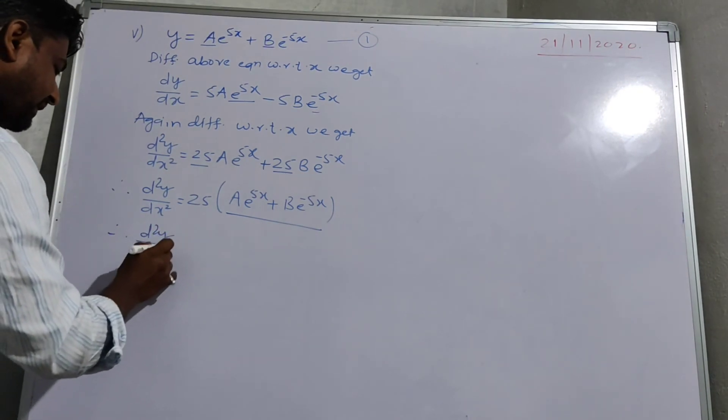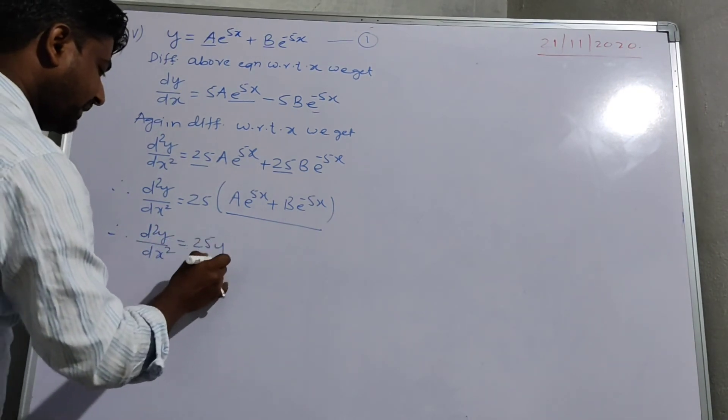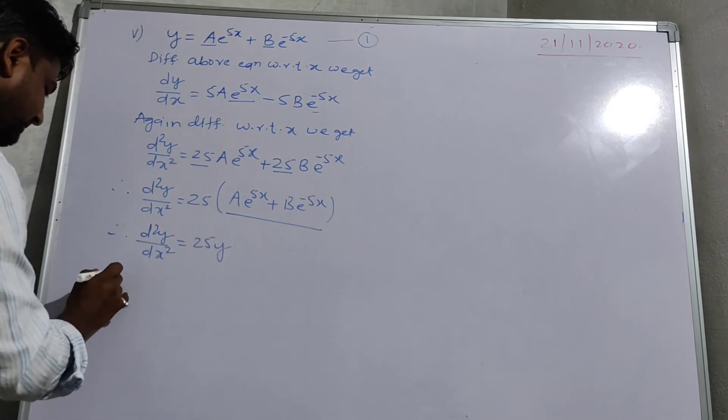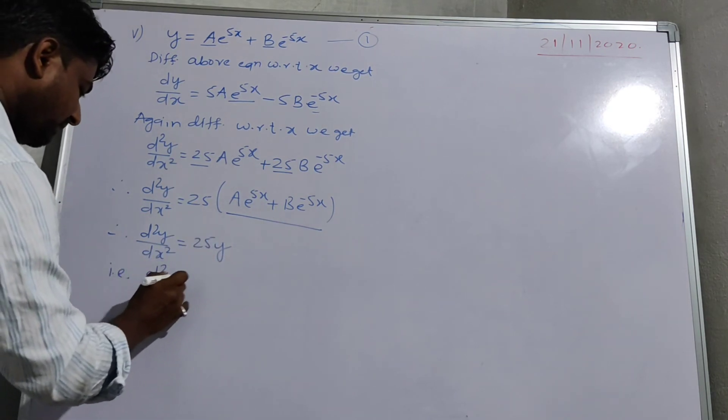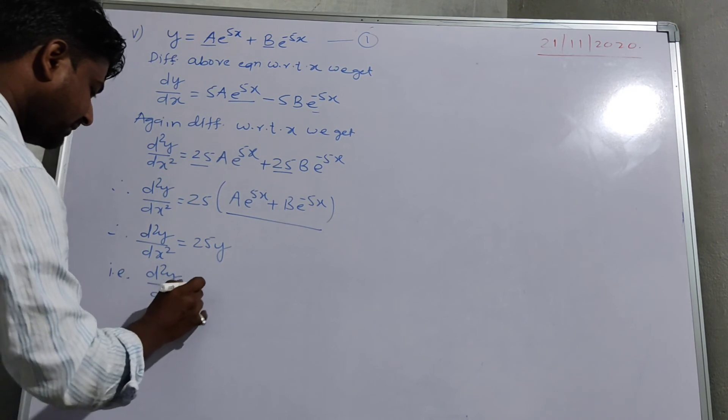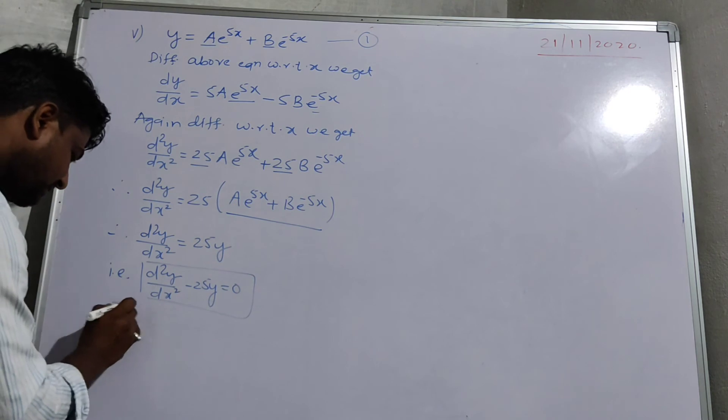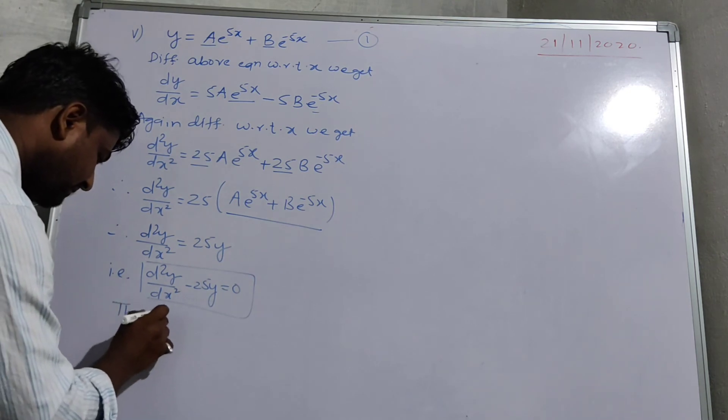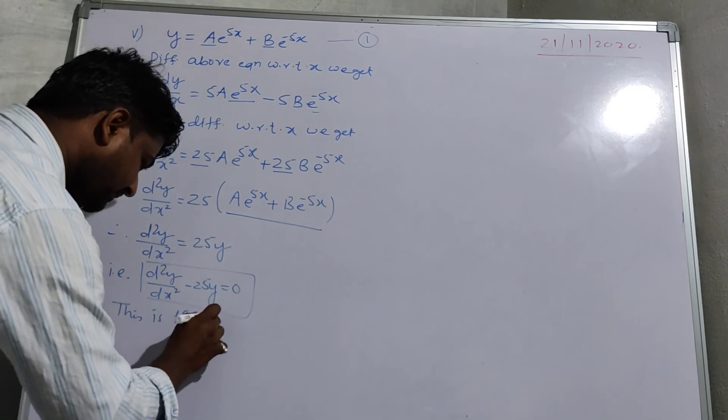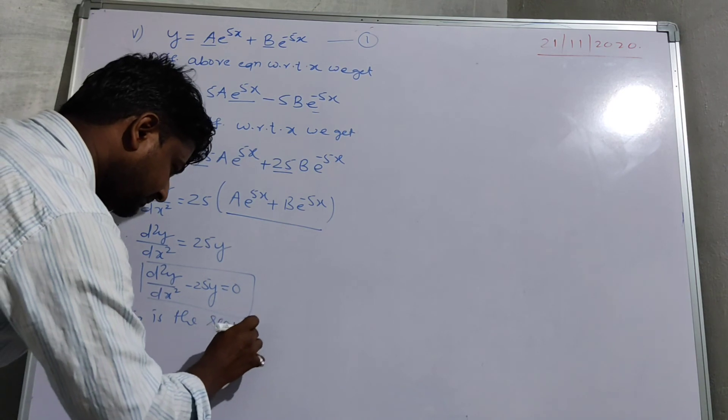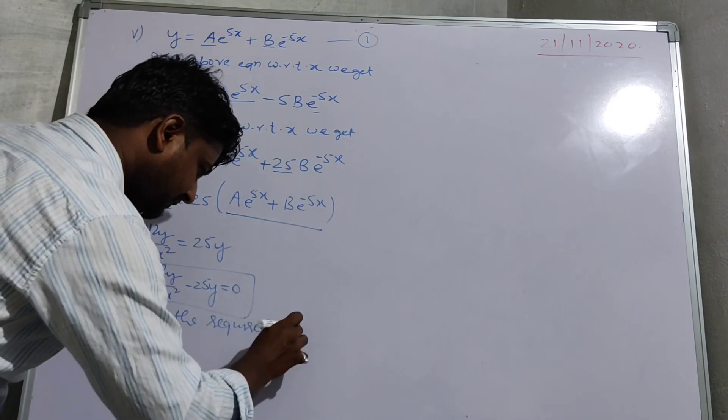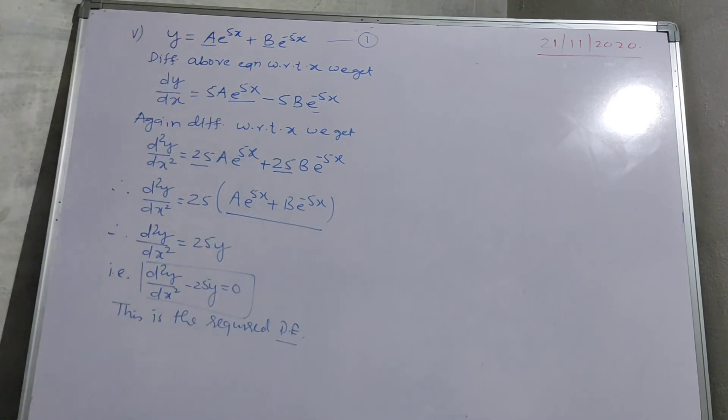Therefore d2y by dx square is equal to 25y, that is d2y by dx square minus 25y is equal to 0, and this is our required differential equation.